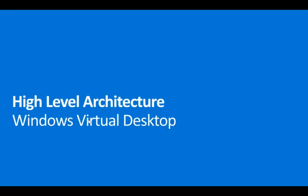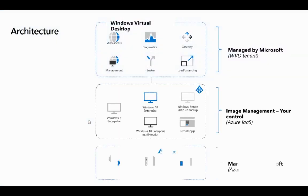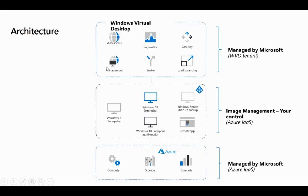At the architecture level, the web access layer, diagnostics, brokering, and licensing — everything previously managed on-premises with Citrix or RDS — is now managed by the vendor, Microsoft. As a partner, customer, or distributor, we only manage the image. Hardware is also managed by Microsoft. Compare this to on-premises Exchange vs. Office 365 — our management becomes very easy and we focus on the work and the high availability available.